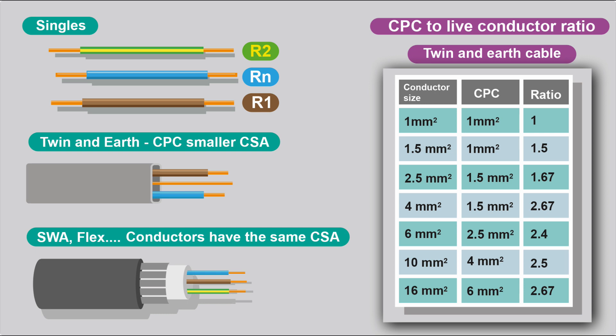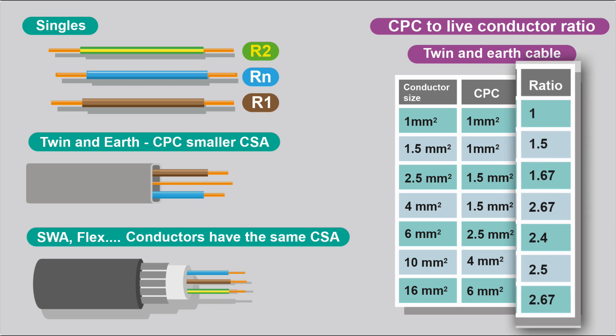10 has a 4mm CPC, and 16 has a 6mm CPC, sometimes it's 10. And as you can see, there's a ratio there, the cross-sectional area of the line conductor compared to the CPC.